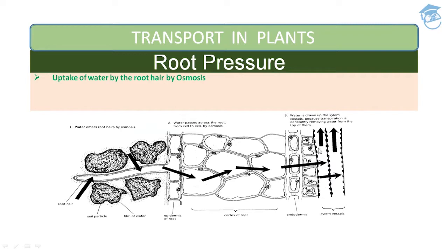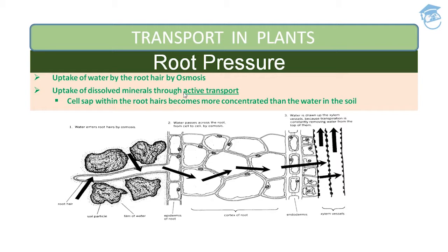How does root pressure maintain itself? Uptake of water by the root occurs by osmosis. Uptake of dissolved minerals occurs through active transport, and the cell sap within the root becomes more concentrated than the water in the soil. Water then enters the root by osmosis, and passes across the root from cell to cell by osmosis — from one cell to the adjacent cell — and this process continues.